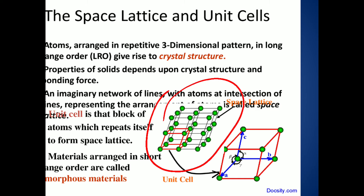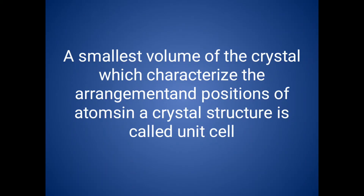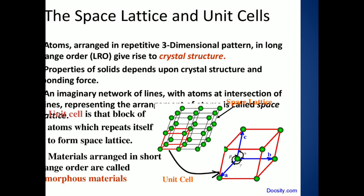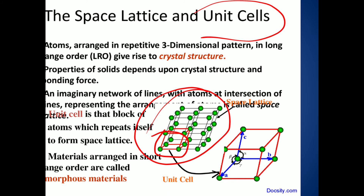By connecting all the points, drawing an imaginary line, that is called the space lattice. Next, unit cell — unit cell means the smallest volume of the crystal. This is the entire structure of a metal; if we take only one small part of that structure, we call it a unit cell.